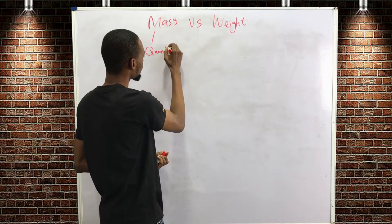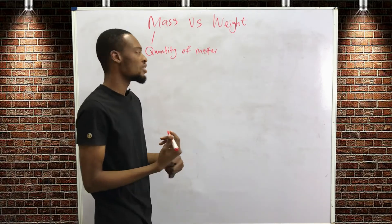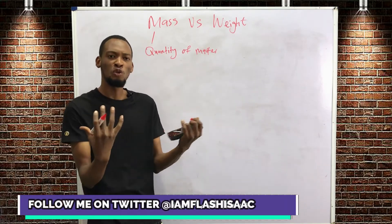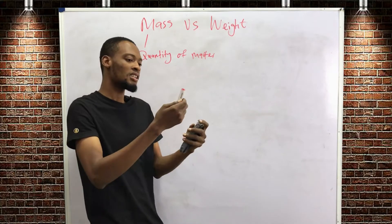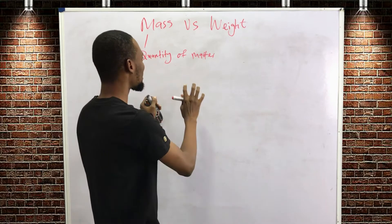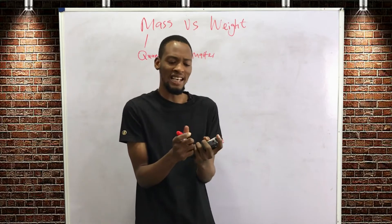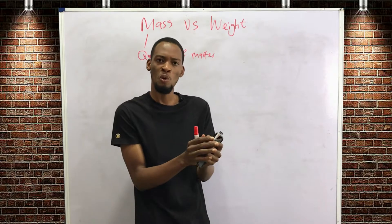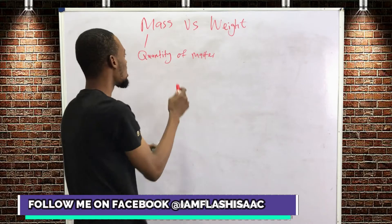Matter is anything that has mass and occupies space. This marker is matter — it has mass. This board is matter — it has mass, and it's occupying space. The quantity of matter in a body describes how big, how small, how compressed, or how heavy or light the body is. That is mass.